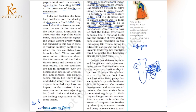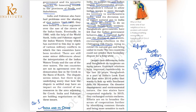We wanted to import natural gas, but Bangladesh refused. There was an attempt to bring gas from Myanmar through Bangladesh's territory, but Bangladesh said no. From Bangladesh's perspective, they say the Indian government behaved like a regional bully over the sharing of river waters and encouraged rebellions in the Chittagong Hill Tracts, and tried to extract natural gas unfairly.